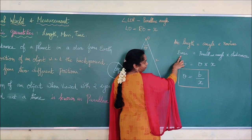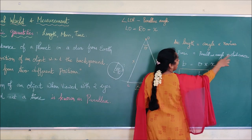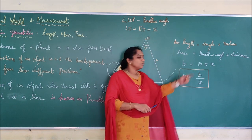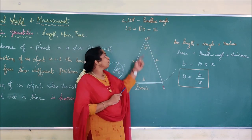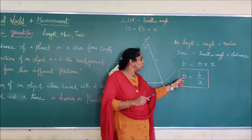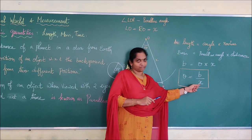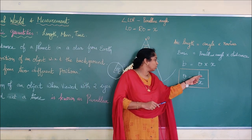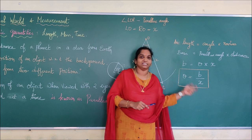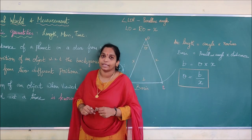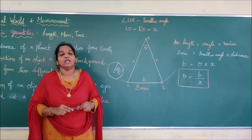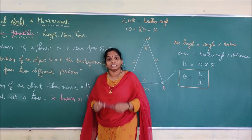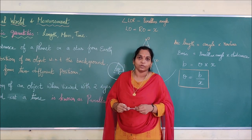Therefore the basis B equals theta into X, giving us the parallax formula: B = θ × X. If we want to find the parallax angle, theta = B / X. If we want to find the distance X, then X = B / θ. Using this formula, we can find the parallax angle and easily calculate the distance. This parallax method also helps us determine the diameter of celestial objects.